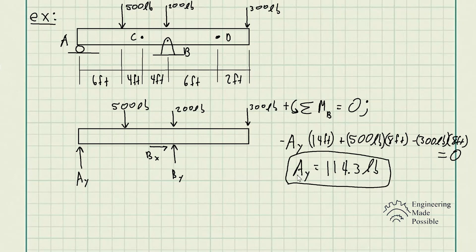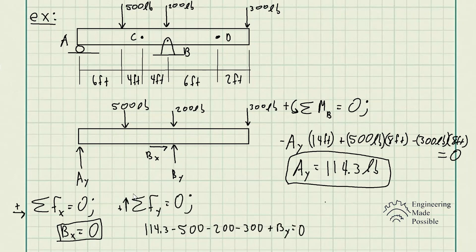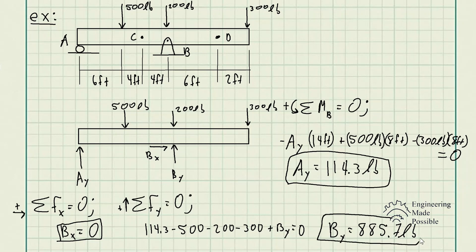Solving gives us AY equal to 114.3 pounds. For the sum of forces along the X direction, we only have BX, so BX equals 0, meaning there is no X component for the reaction at point B. For the sum of forces along Y — taking upward as positive — we have 114.3 minus 500 minus 200 minus 300 plus BY equals 0, giving us BY equal to 885.7 pounds.